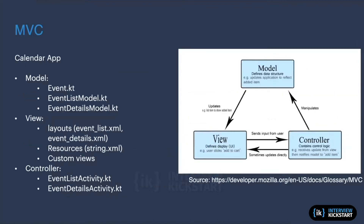Looking at our calendar application as an example, in MVC we can have a model layer with an event list model, event details model, and event data. The view section will have all the layouts, XML files, resources, and any custom views. The controller will have the event list activity as our main activity, optionally excluding the splash activity.